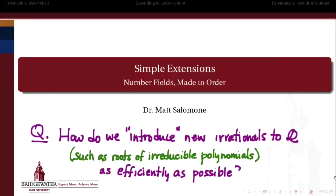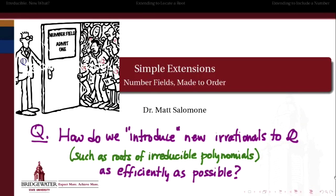Our goals in this video are to answer the question: how do we take the rational numbers and introduce them to a new irrational — for example, the root of an irreducible polynomial? But when we do that, we want to introduce the rationals to that new irrational friend as efficiently as possible. In other words, we want to let the square root of 2 through the door, but we don't want to let through the square root of 5 or the square root of 3 unless we need them. So how do we enlarge the rational number field by just a little bit to create solutions to polynomials we didn't have before?